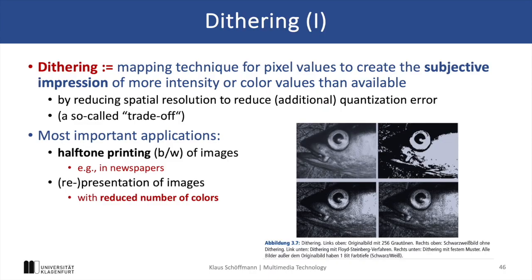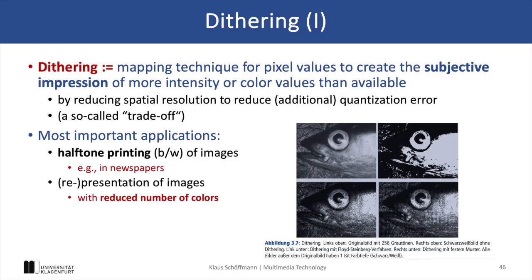For the second part of this video, let's talk about a very specific image processing method: dithering. Dithering has been used a lot by the media, for example for newspapers, because it creates the impression of more colors or more intensities in an image by spatially redistributing pixel values. It is used in scenarios with limited resources, where we cannot increase both the resolution and the number of colors — it's a trade-off where we sacrifice one for the other. For example, if we have an image with 256 gray values but can only use two colors, namely black and white, we can create the impression of more gray values by redistributing quantization errors. The example on the bottom left shows the Floyd-Steinberg method, while the one on the bottom right shows dithering with a fixed pattern.